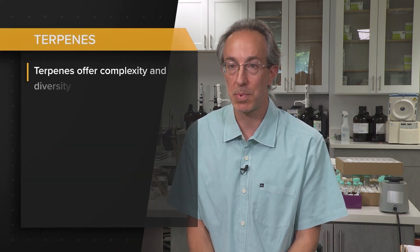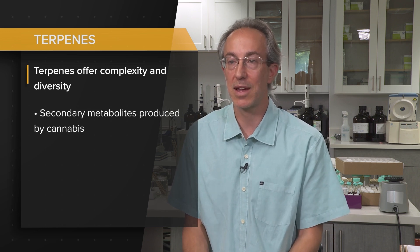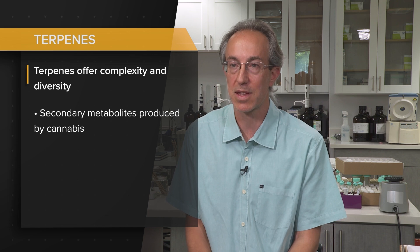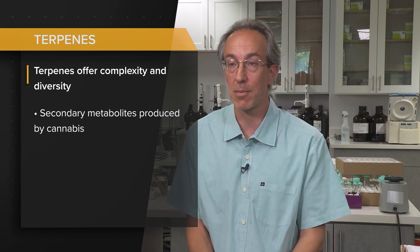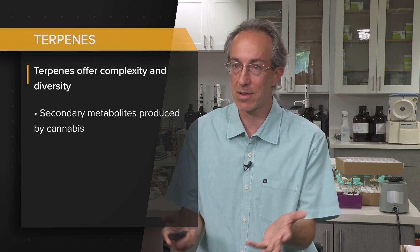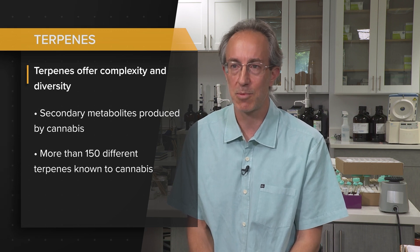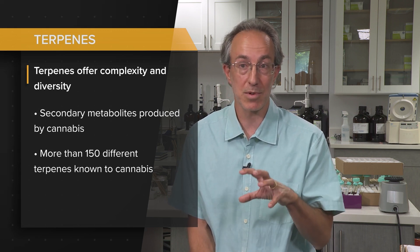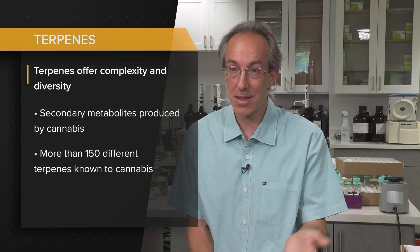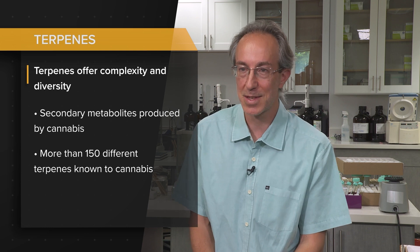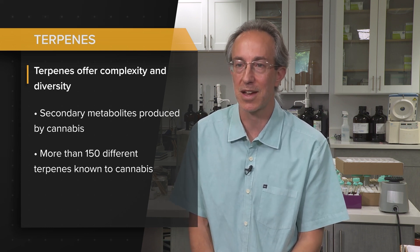Cannabinoids are one key part of the cannabis plant, but another critical aspect is terpenes. Terpenes are secondary metabolites, often produced down different biological pathways from the cannabinoids, though the plant uses common intermediates — sending some down a cannabinoid path and some down the terpene path. Today there are more than 150 different terpenes known to cannabis, and we're up to almost 1,300 different molecules found in and on the cannabis plant. That number continues to grow as we find more cultivars.